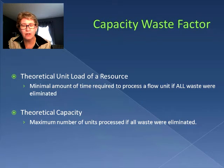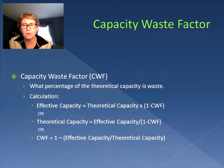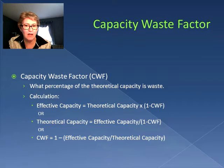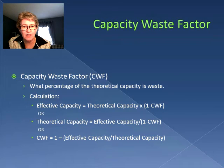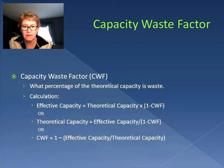What we're looking for here is the comparison between our effective capacity and our theoretical capacity. The capacity waste factor is actually a percentage — it is the percentage of the theoretical capacity that is waste. We can look at it three different ways: if we have the theoretical capacity and the capacity waste factor, also known as CWF, we can calculate the effective capacity. If we have the effective capacity and the waste factor, we can calculate the theoretical capacity. And lastly, if we have the effective capacity and the theoretical capacity, we can calculate the capacity waste factor.